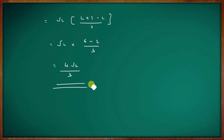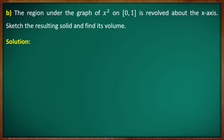So the required area is 4√2/3. This completes the first part. For part B: the region under y = x² on [0,1] is revolved about the x-axis to form a solid.